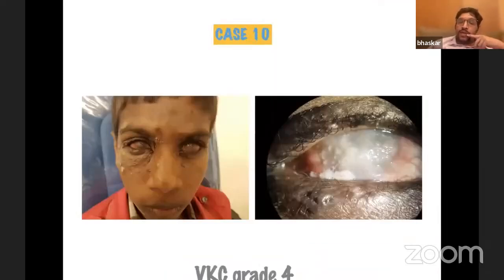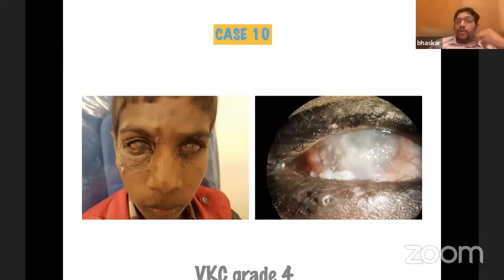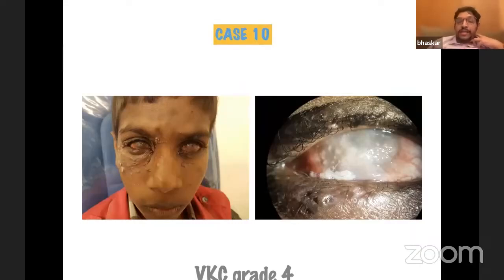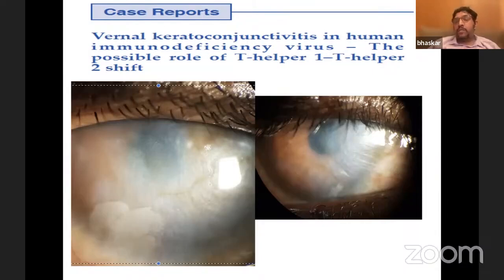A previously published case: a child with VKC with severe corneal involvement and molluscum had to be shifted to a third-line ART regimen. Until the immune status improved, we couldn't get him off topical steroids at all — his eye looked as if there was complete limbal deficiency. Now, almost 12 years later, his vision has improved from counting fingers to around 6/18, improving to 6/7.5 in both eyes, with disease under control because HIV status is controlled with the third-line ART regimen.